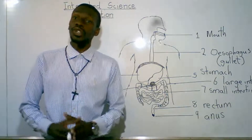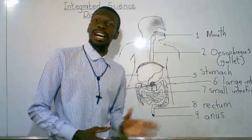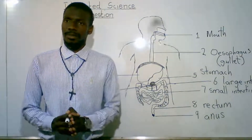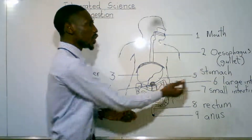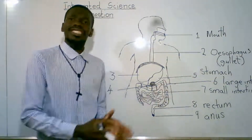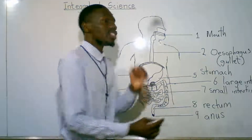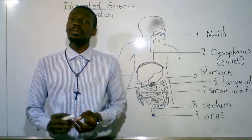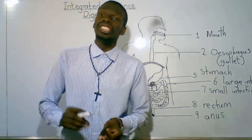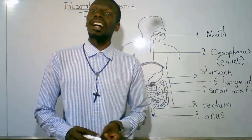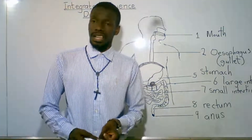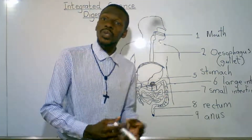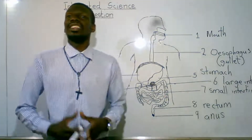The digestive system overview covered the parts. The small intestine is made up of three parts: the duodenum, jejunum, and ileum. The large intestine is also known as the colon.